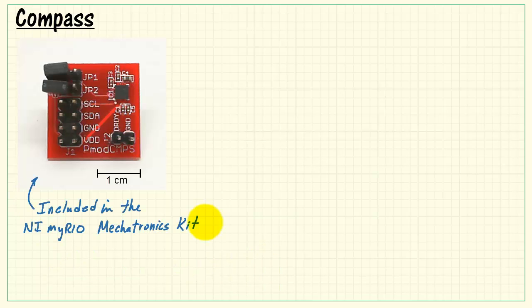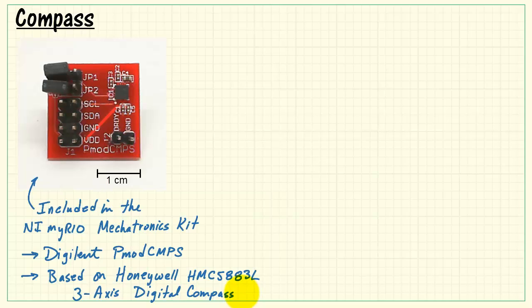This is the Digilent PMOD Compass Board that's included in the NI MyRio mechatronics kit. This part is based on the Honeywell HMC5883L three-axis digital compass located right there in the upper right corner.